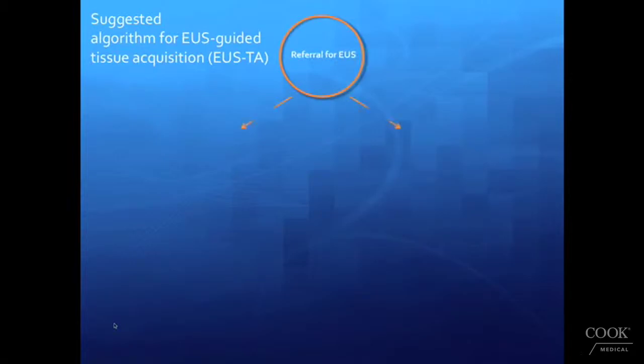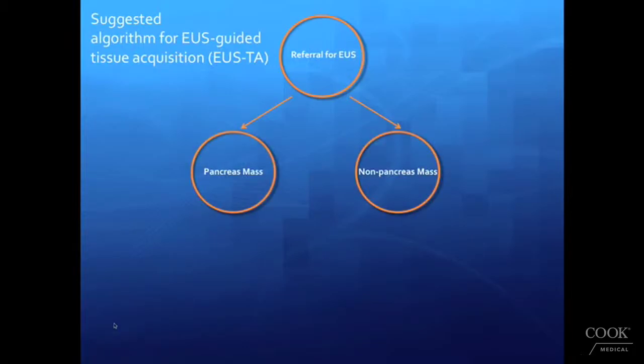From the results of this current randomized control trial, we offer a suggested algorithm for EUS-guided tissue acquisition. We have divided this algorithm, after referral for endoscopic ultrasound, into pancreas and non-pancreas lesions.